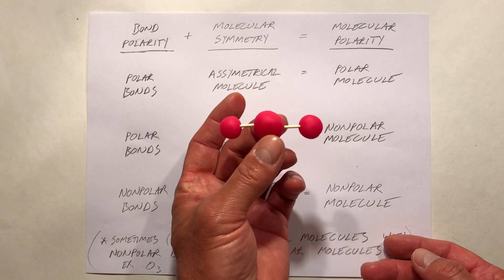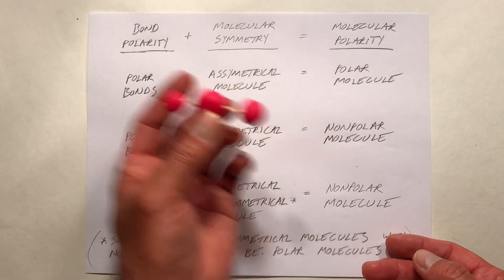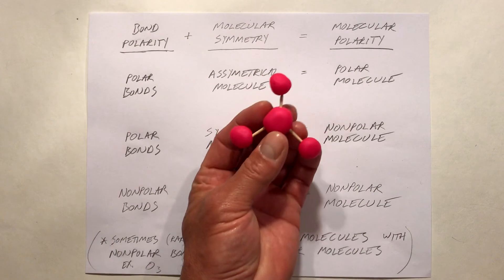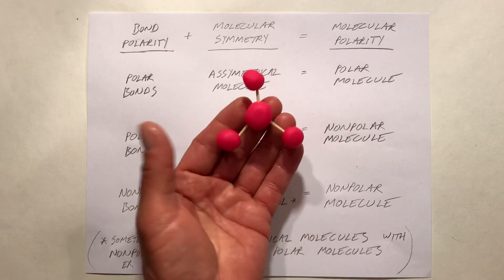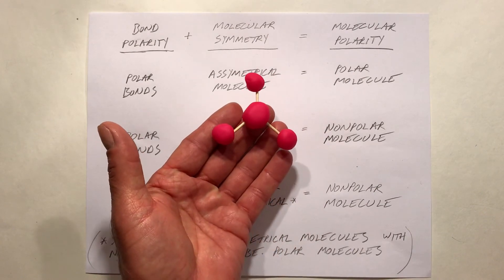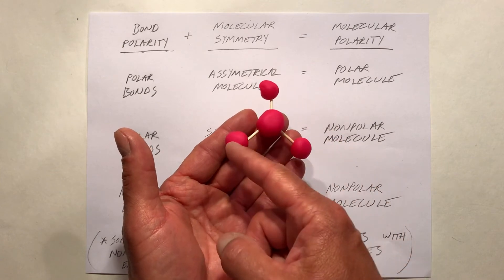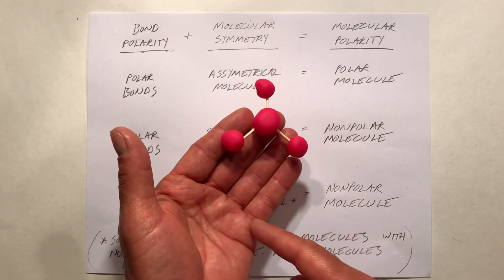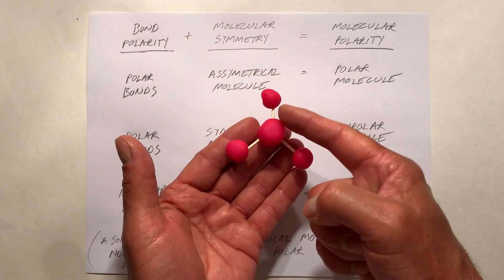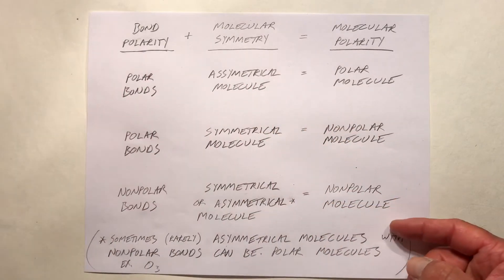This is one of the symmetrical molecules we considered. Another symmetrical molecule would be the trigonal planar shape — central atom bonded to three atoms in the same plane, with a 120 degree angle.